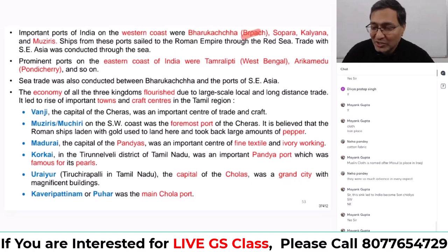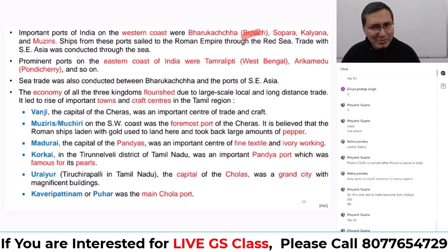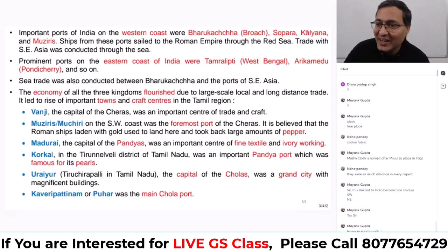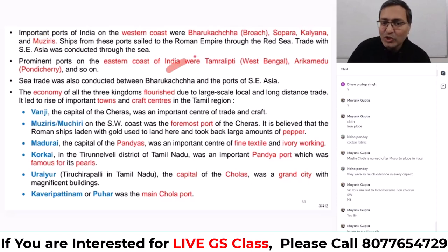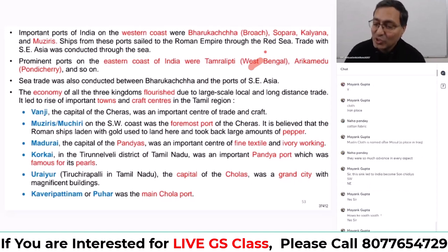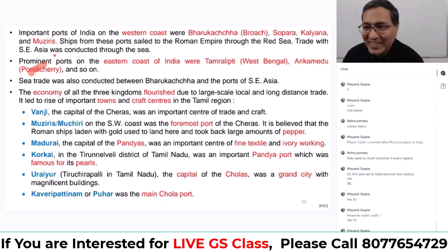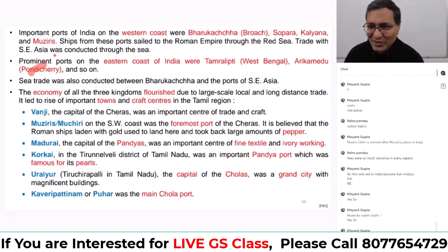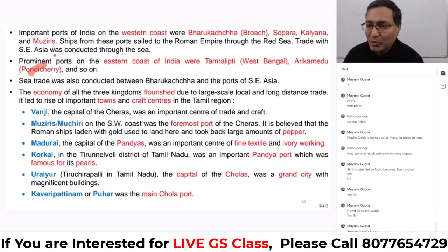The important ports include Bhrigukachha or Broach in present-day Gujarat, which was a part of Dakshinapath and a place of conflict between the Kshatrapas and Satavahanas. Then Kalyan and Paithan in Maharashtra, and Muziri in present-day Kerala near Kochi. On the eastern coast, Tamralipti in West Bengal, where the Uttarapath concluded. Arikamedu is in present-day Pondicherry. Notably, Chennai was not a port at that time — Chennai is an artificial port.